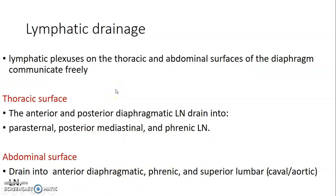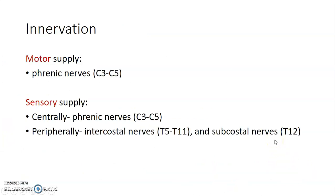For lymphatic drainage of the thoracic diaphragm: the thoracic (superior) surface has anterior and posterior lymphatics that drain into parasternal, posterior mediastinal, and phrenic lymph nodes. The abdominal (inferior) surface drains into anterior diaphragmatic nodes, phrenic nodes, and superior lumbar nodes — which are the caval or paraaortic lymph nodes.